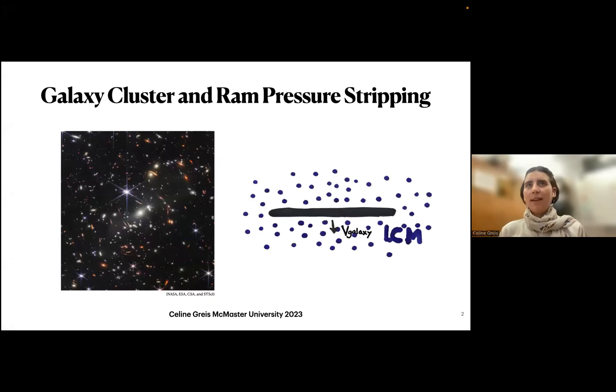What motivates my research project is that there are different environments in our universe, with positions where there are higher densities of galaxies and lower densities. In those higher density galaxy clusters, we have different environmental effects that drive the evolution of the galaxies within it. One key driver is ram pressure stripping, which I think about as this constant wind that a galaxy experiences when it moves through the intercluster medium of a galaxy cluster.